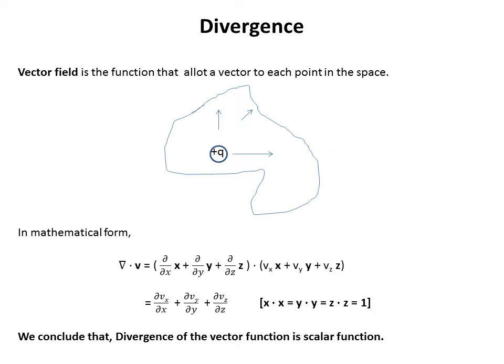The divergence in mathematical form is: DEL·V = (∂/∂x)x̂ + (∂/∂y)ŷ + (∂/∂z)ẑ dotted with Vx·x̂ + Vy·ŷ + Vz·ẑ. Here x̂·x̂ = ŷ·ŷ = ẑ·ẑ = 1, so DEL·V = ∂Vx/∂x + ∂Vy/∂y + ∂Vz/∂z. We conclude that the divergence of a vector function is a scalar function.